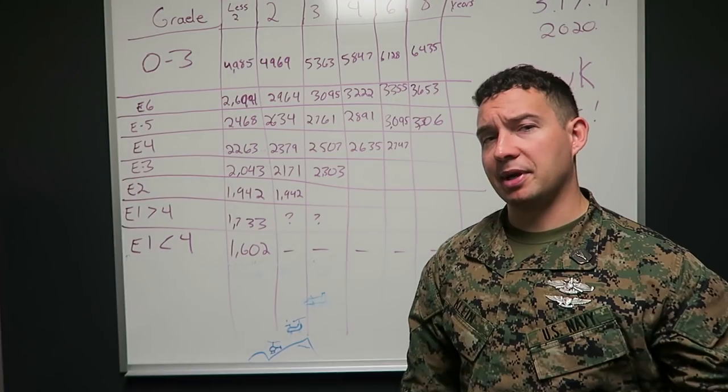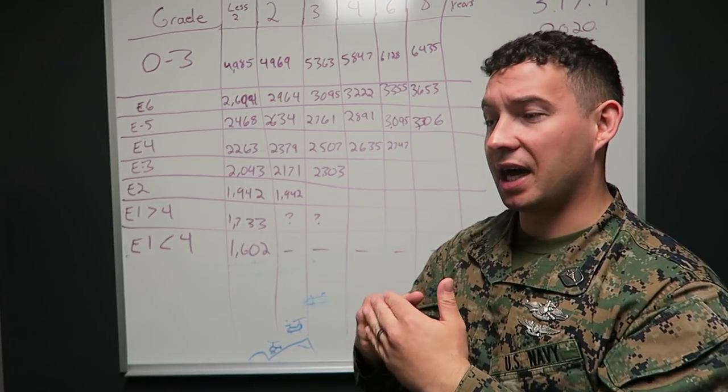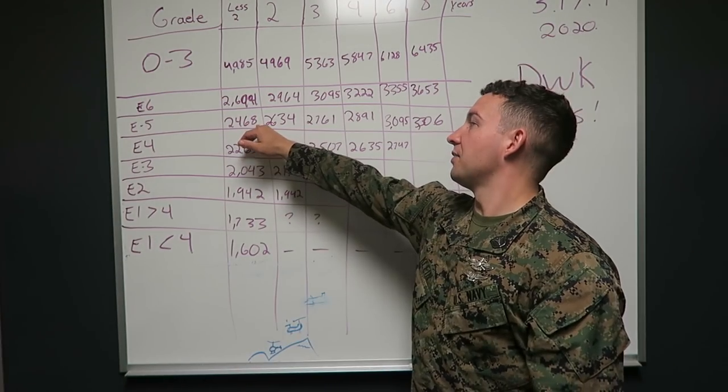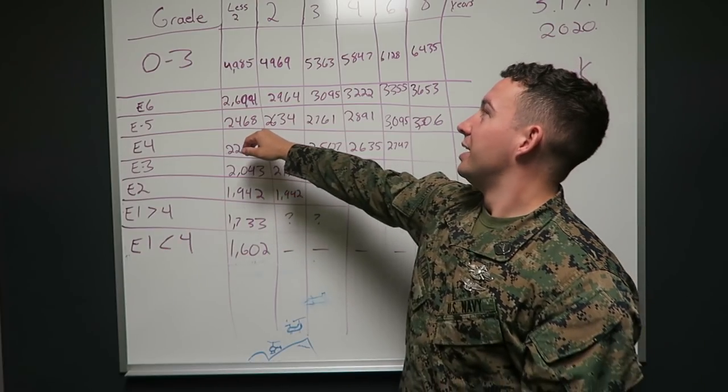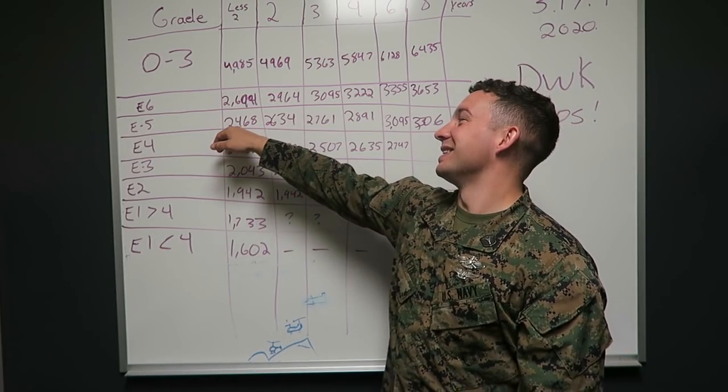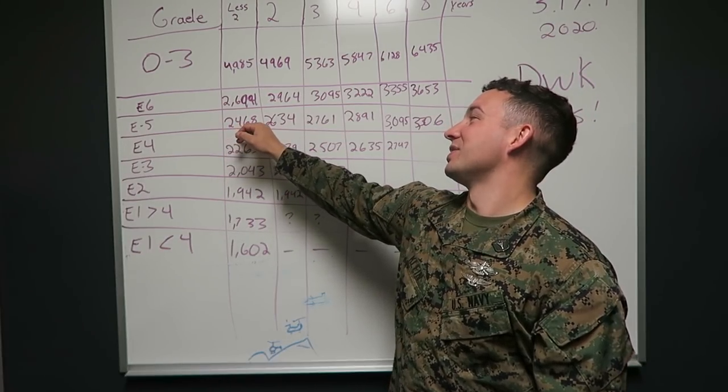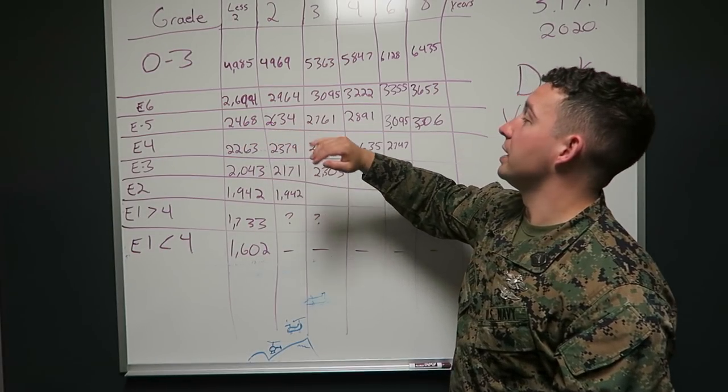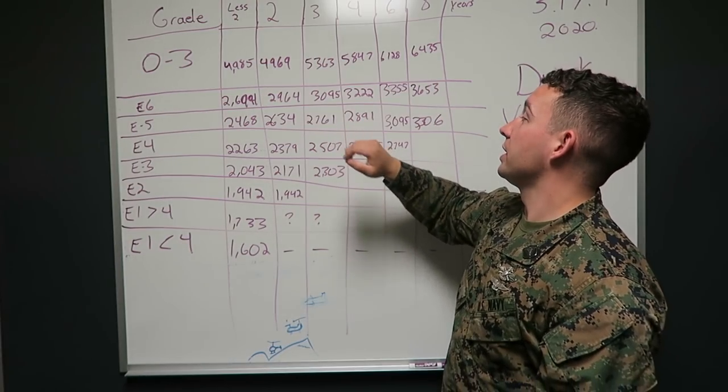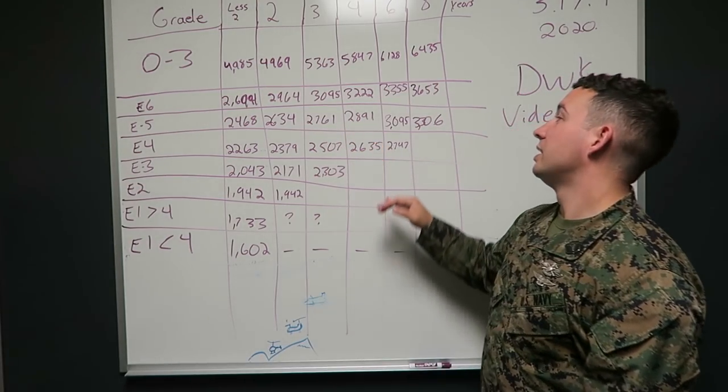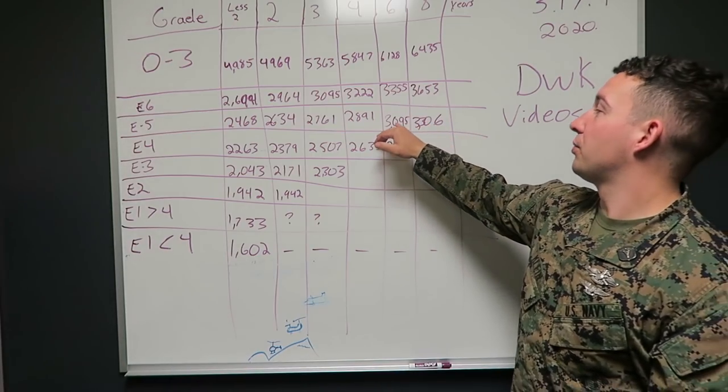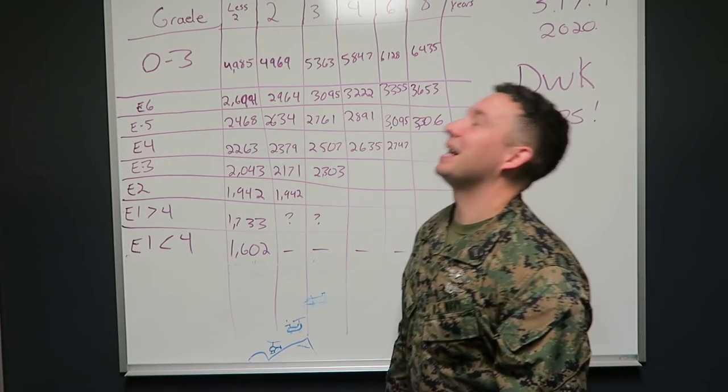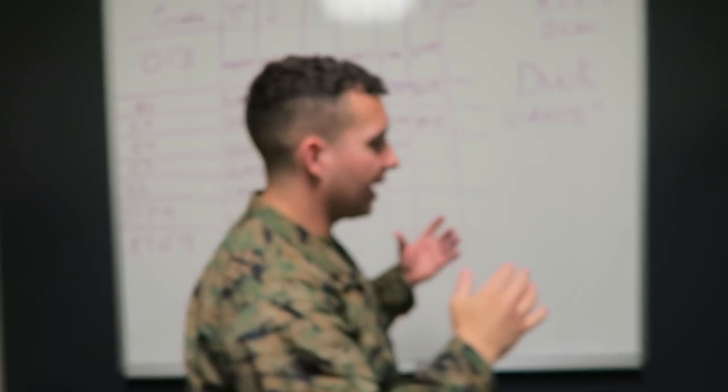Up to an extent because then people just end up HYT, which is higher tenure, which means you didn't pick up rank fast enough time to not be kicked out. E5, which I'm the most ecstatic about. Less than two years, $2,468. Two years, $2,634. Three years, $2,761. Four years, $2,891. Six years, which I'm about to hit, $3,095, baby. We're breaking the 3K cusp.